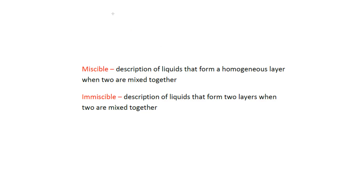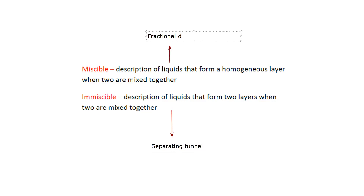When selecting a technique to separate liquids, we first check whether they are miscible or immiscible. If the liquids are immiscible, the technique we use is called a separating funnel. If we want to separate miscible liquids from each other, the technique is called fractional distillation. So: miscible liquids → fractional distillation; immiscible liquids → separating funnel.